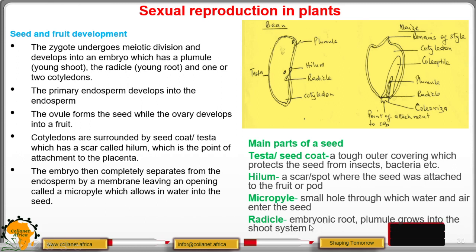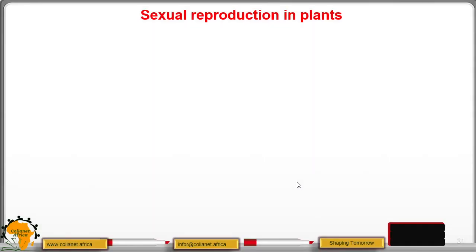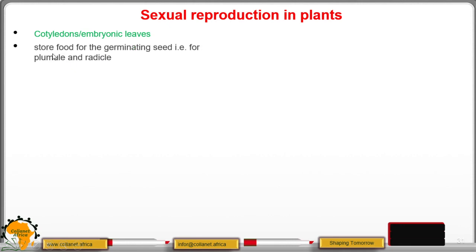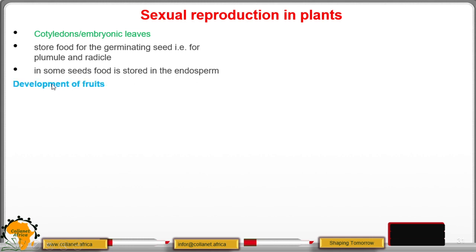The plumule grows into the shoot system. Cotyledons are embryonic leaves that store food for the germinating seed, supporting both the plumule and the radicle. In some seeds, food is stored in the endosperm.